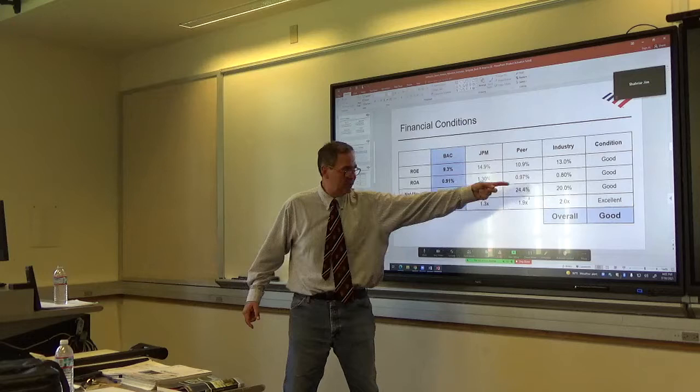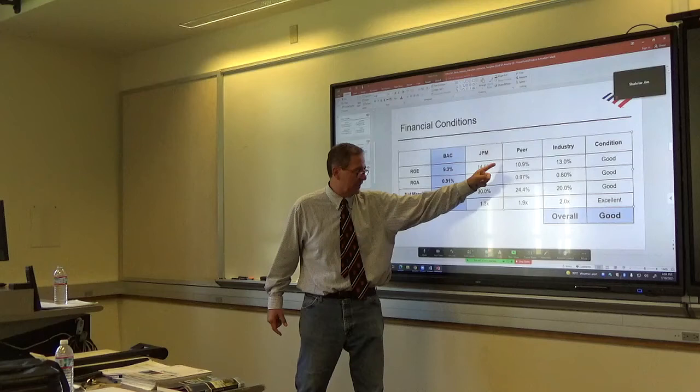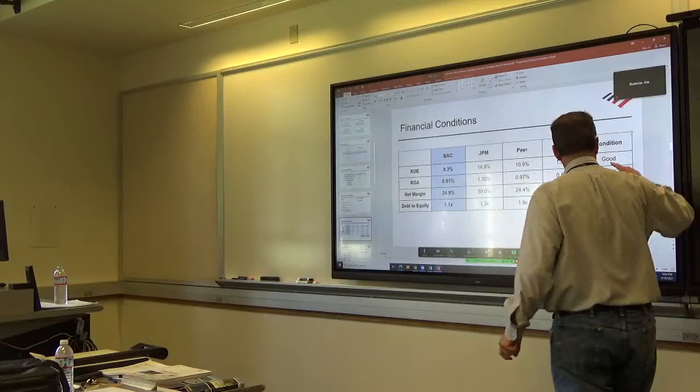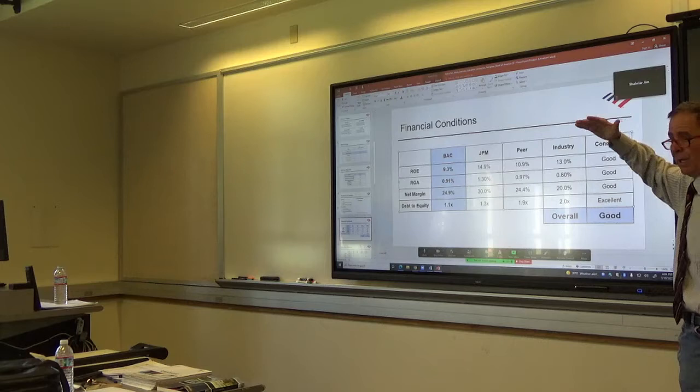You've got your industry ratios. And then you compare the company's financial ratio against its direct competitor, the peer, and the industry. And you code it. Either good, either excellent, good, above average, average, below average, or poor.